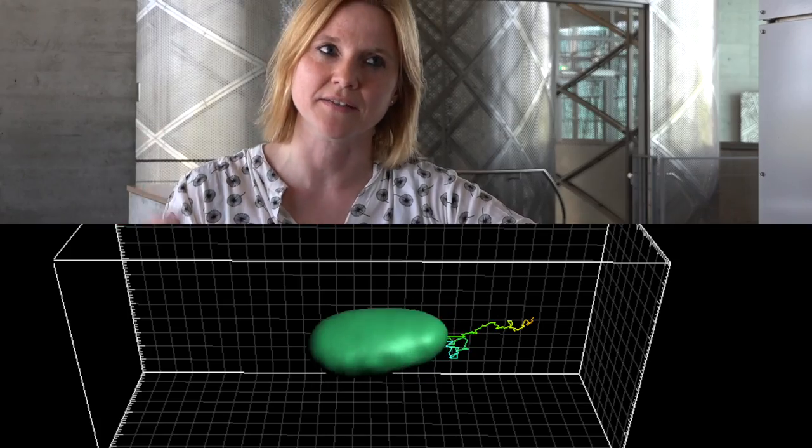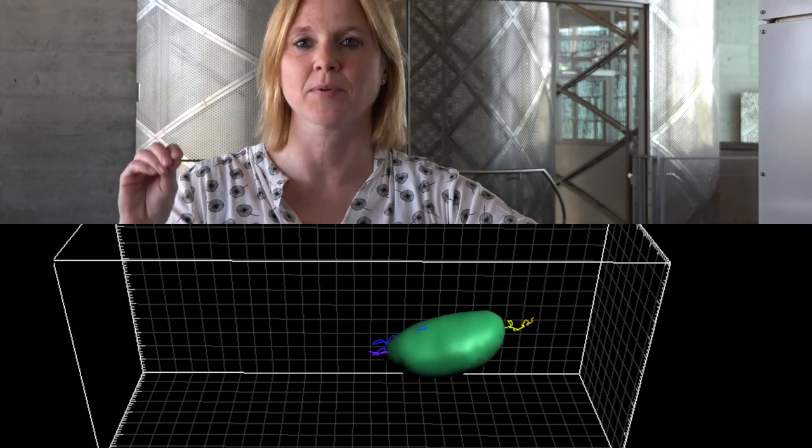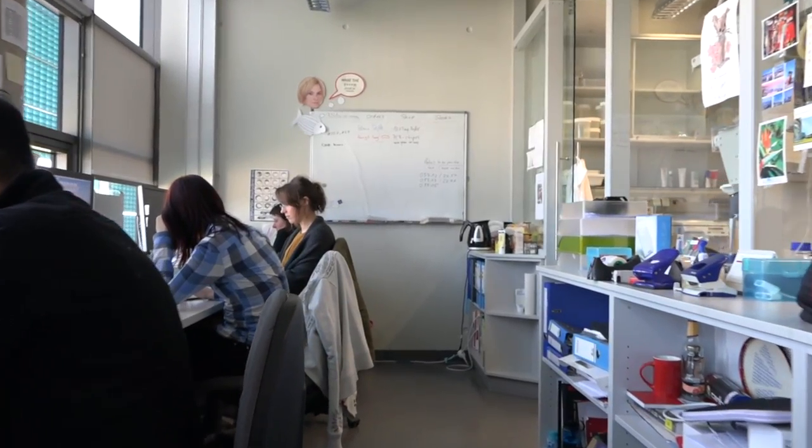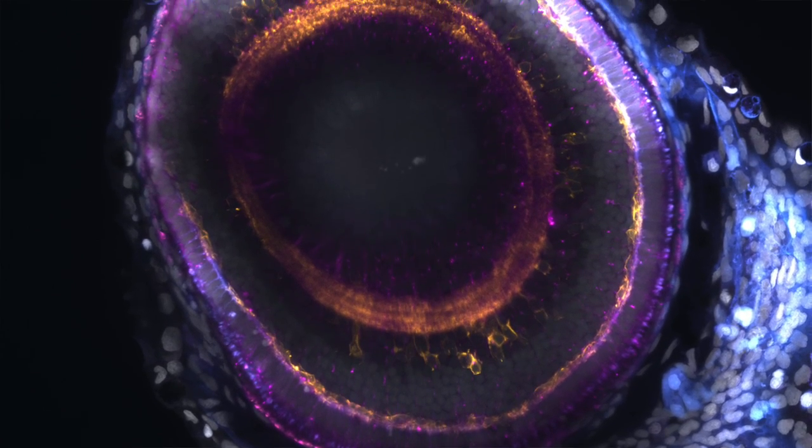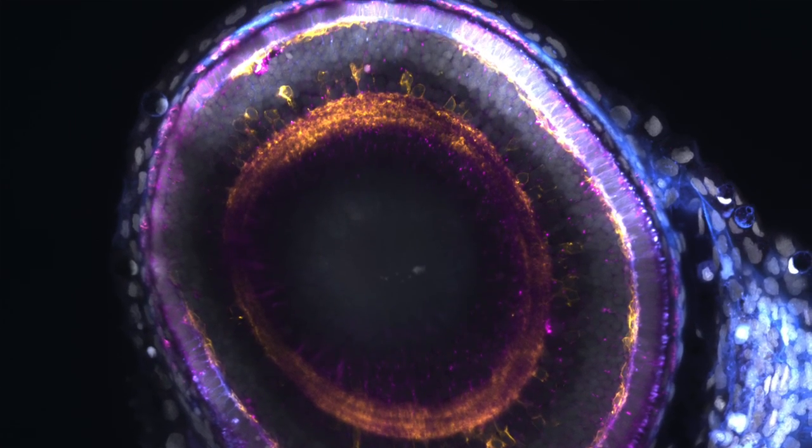In my lab we want to understand the basic principles of how cells form tissue, because I very strongly believe that you have to understand development — where it happens, how it happens — to in the long term really understand also what happens when things go wrong. In my group we try to understand how a very important part of the brain is made, which is the retina.